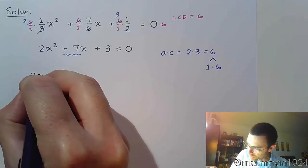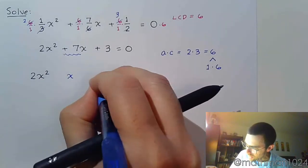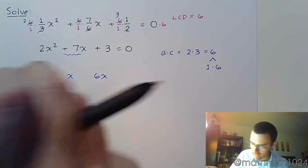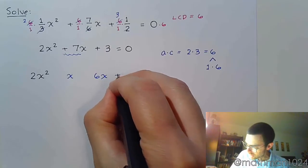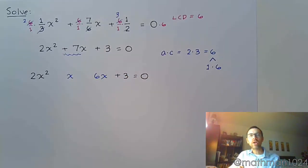All right. So we have 2x squared, rewriting the 7x as x and 6x and plus 3. Now, I want you to understand something, that it doesn't matter if I write x and 6x, but then you write 6x and x. The order of those two terms in the middle doesn't matter. What matters is that you have the right numbers and the right signs.